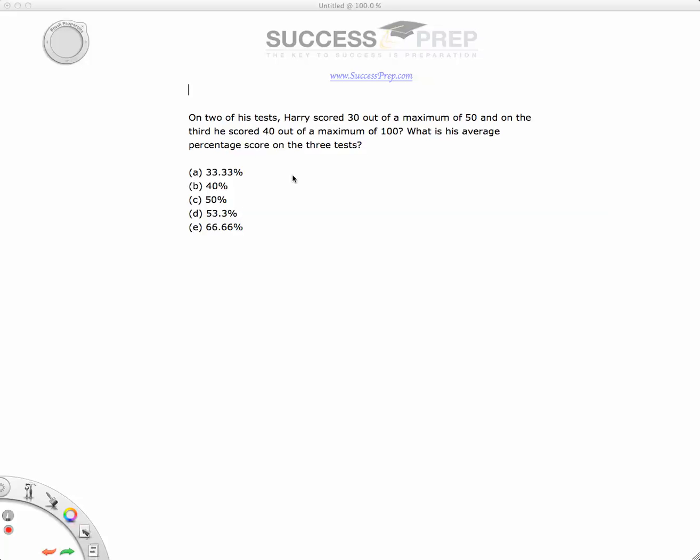So the main thing here is to just focus on finding out the percentage that Harry has scored in each of the three tests and then finding the average of those scores. The very first thing we want to do is get the information on what Harry scored on the first test. So let's go to test one.